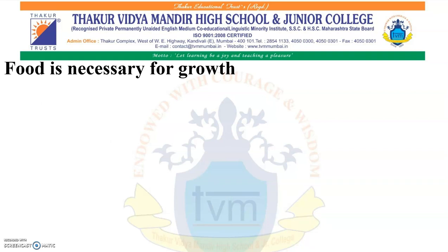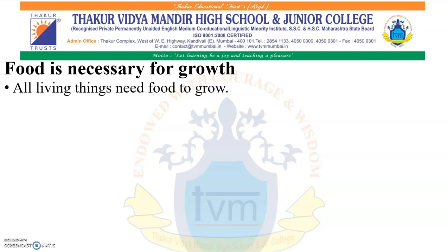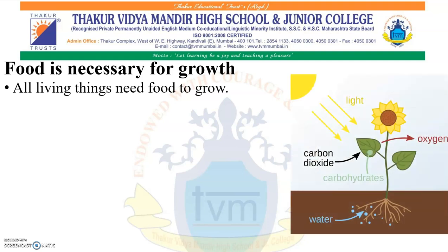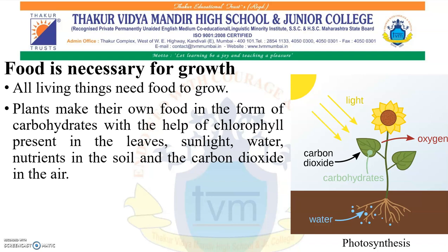The next characteristic is that food is necessary for growth. All living things need food to grow. Can you identify what this picture is about? It is showing a process called photosynthesis, which is carried out by plants to make their own food. Plants make their own food in the form of carbohydrates, with the help of chlorophyll present inside the leaves, sunlight, water, nutrients in the soil, and carbon dioxide present in the air.